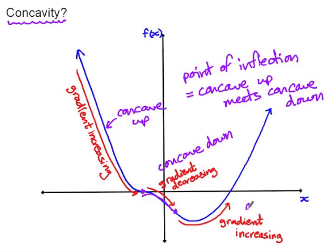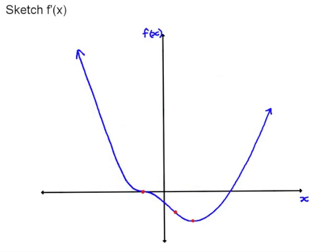Points of inflection are significant because they are where the concavity changes — a point of inflection is where concave up meets concave down. In this function, we've got concave up while the gradient is increasing, then concave down where the shape is more like part of a hill, and then concave up again. We're going to use this information to plot a graph of the gradient. The significant points — a horizontal inflection point, an inflection point, and a minimum turning point — all have gradient zero.